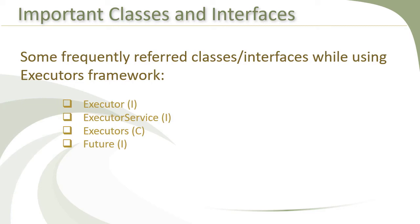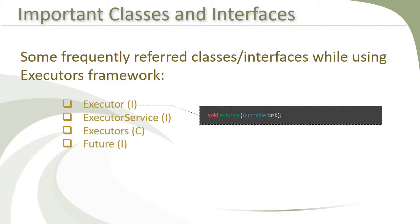In the previous lesson, we had an overview of the executor's framework. In this lesson, we will discuss the most important interfaces and classes that we come across frequently while using the executor's framework. The first one is the Executor interface, which is the main interface in this framework. Its main purpose is to decouple the task submission step from thread creation and running steps. It has a method void execute that takes a Runnable as a parameter.